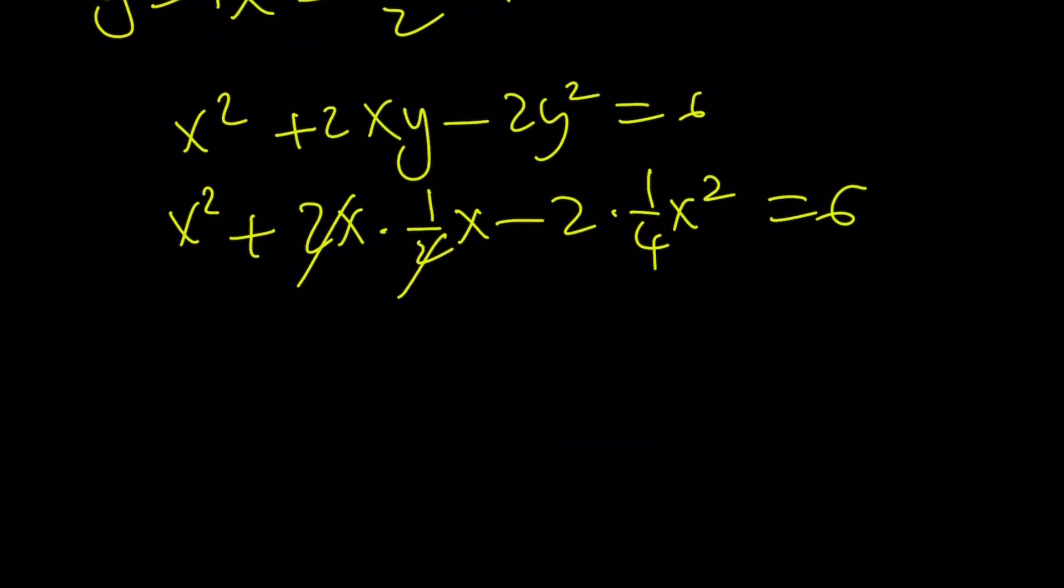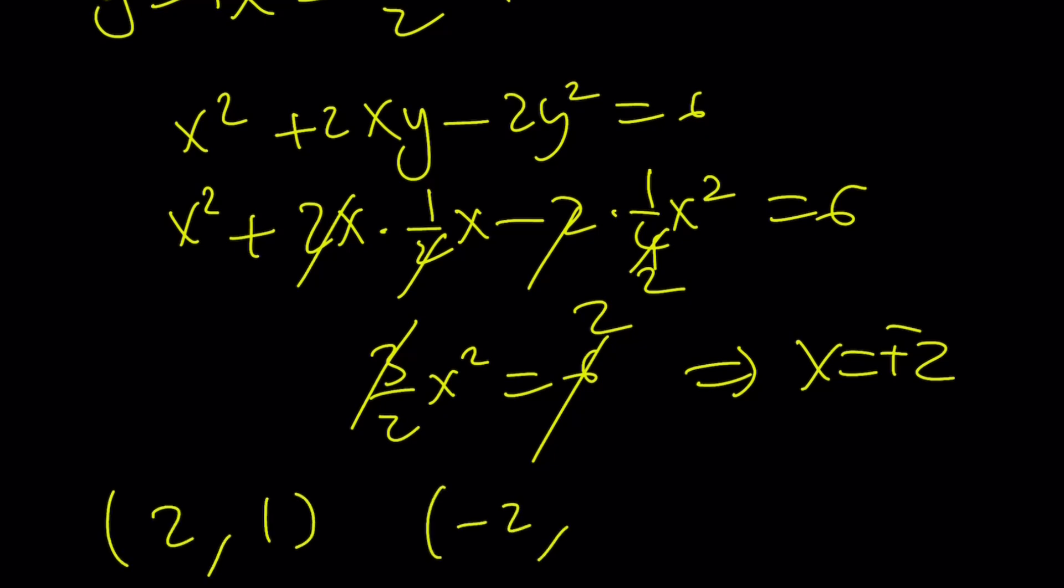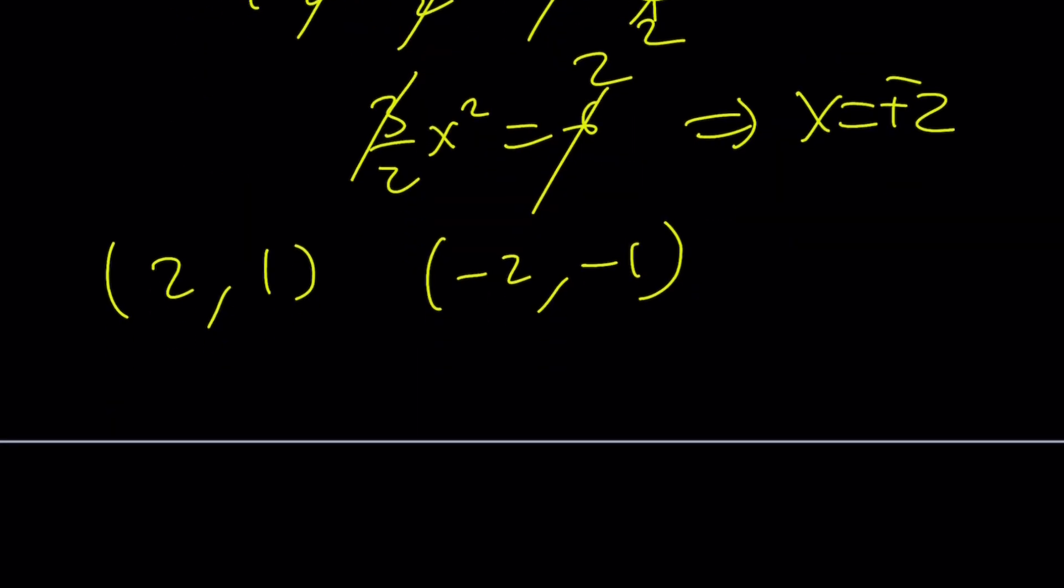This is going to give you 2x² minus 1/2 x² that's going to be 3/2 x² = 6, cross cancel you get a 2, x² = 4, x = ±2 from here. And of course we do know y is half of that so if x is 2 y is 1, if x is -2 y is -1. Great. And now with the other solution you can proceed similarly.